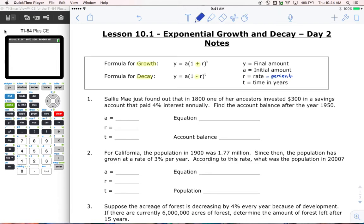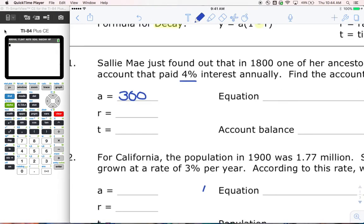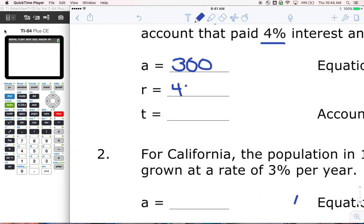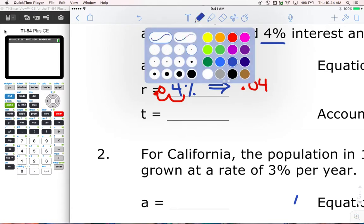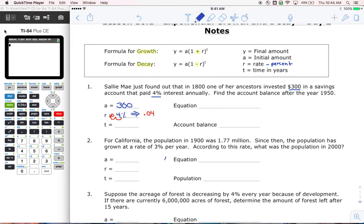Let's go ahead and look at problem number one. Sally Mae just found out that in 1800, one of her ancestors invested $300 in a savings account that paid 4% interest annually. Find the account balance after the year 1950. So we're going to write this equation. The A value is the initial amount - that's going to be $300 in this case. R is 4%. Now I know we've talked about this in the past, but just to remind you, 4% you have to write it as a decimal. You have to move the decimal place twice.